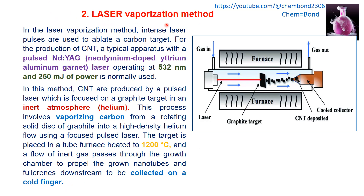The second method is laser vaporization. Intense laser pulses are used to ablate a carbon target, which is graphite. A typical apparatus uses a pulsed neodymium-YAG laser operated at 532 nanometers and 250 millijoules of power. Carbon nanotubes are produced by a pulsed laser focused on a target in an inert helium atmosphere.